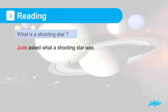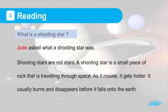Should he ask what shooting stars are? Shooting stars are not stars. A shooting star is a small piece of rock that is traveling through space. As it moves, it gets hotter. It usually burns and disappears before it falls onto the Earth.